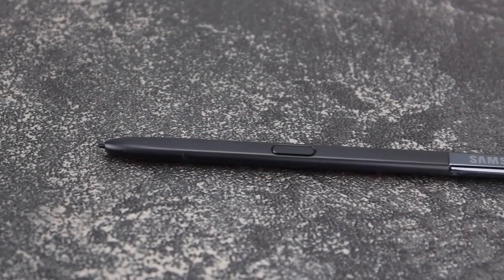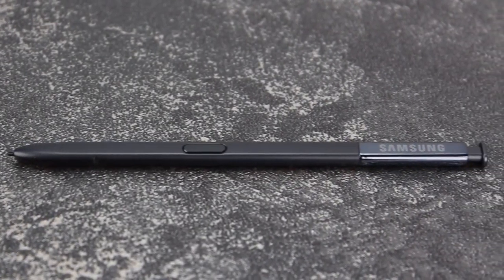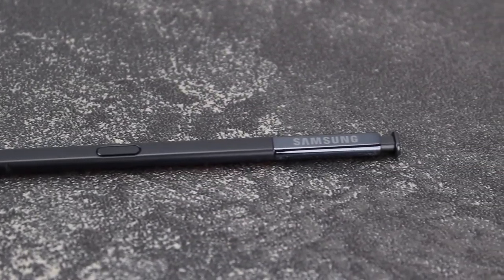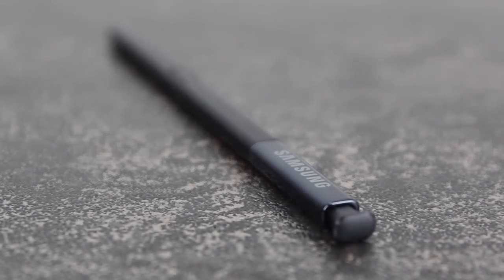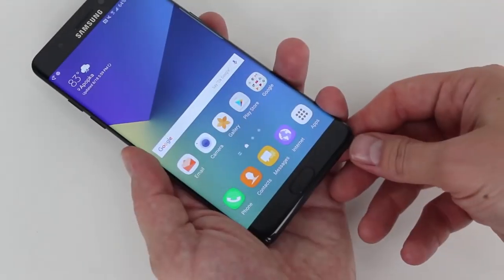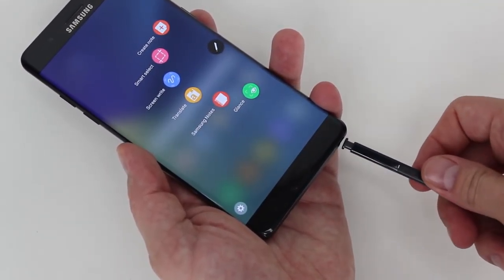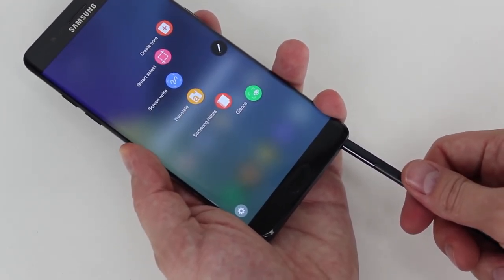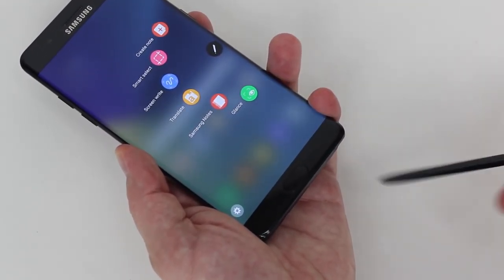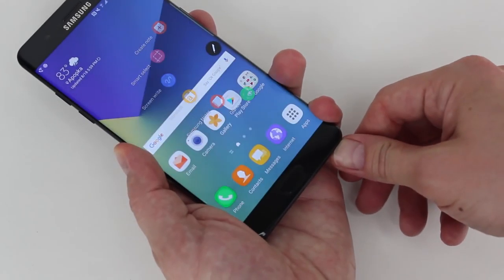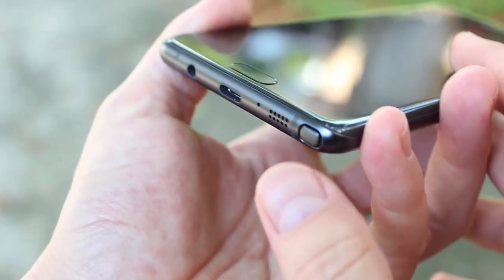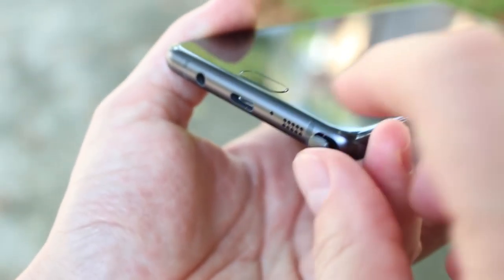Starting off with the design, we can see it's a similar concept to the S Pen found on last year's Galaxy Note 5, however it features one big design change that's extremely important to take note of. You can't reverse it in the phone. This was a design flaw on the Note 5 that's thankfully been corrected, but thankfully not because Samsung has removed the spring-loaded mechanism on the pen. That spring-loaded mechanism is easily one of the nicest additions Samsung has placed on the S Pen since the Note 2 put a rubber tip on the end.